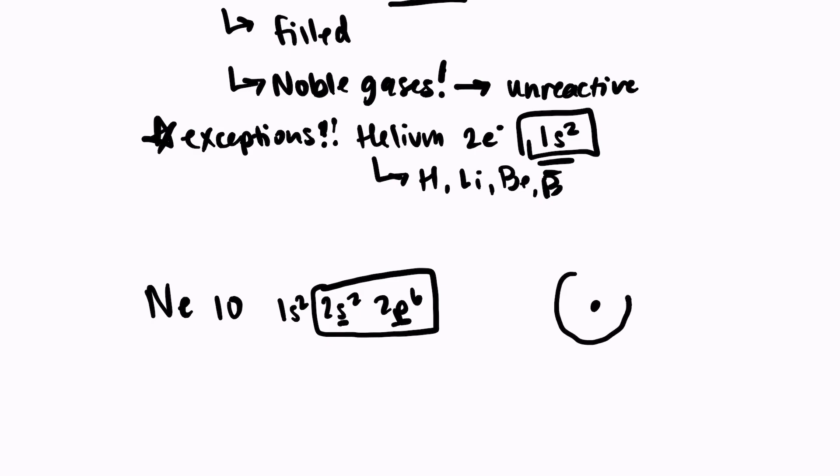If we were to draw this out using a model, it has 2 electrons in 1s and the second energy level has 8. So that second energy level is completely filled and it is completely stable. Neon is following the octet rule. It has a filled second energy level.